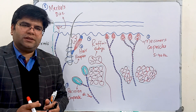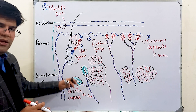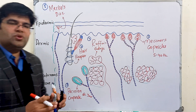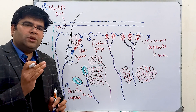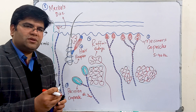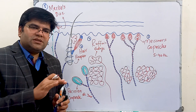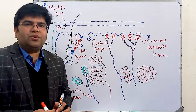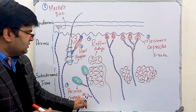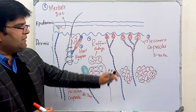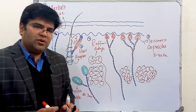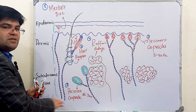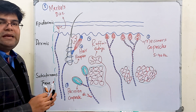The Pacinian corpuscles are present in both hairy and non-hairy skin. They are present in subcutaneous tissue, that is in the superficial fascia, and also in muscles. They are one of the most rapidly adapting receptors — they respond to the on and off of a stimulus. Whenever a stimulus is given or removed from the receptor they respond, but to a sustained stimulus they very quickly adapt. Because of this reason, Pacinian corpuscles are important to detect fast vibrations ranging from 60 to 300 Hz, and also deep pressure.